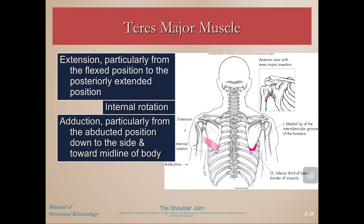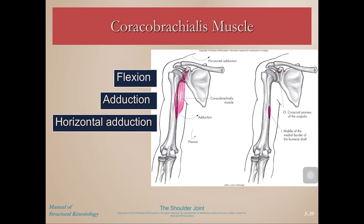Teres major contributes to extension, particularly from a flexed position to a posteriorly extended or hyperextended position. It also does internal rotation — just like the lats — because it inserts on the medial aspect of the humerus. It can adduct the humerus, particularly from an already-abducted position, bringing it down and toward the midline. The coracobrachialis muscle — which doesn't get a lot of attention — can cause pure shoulder flexion, adduction from an abducted position, and horizontal adduction.